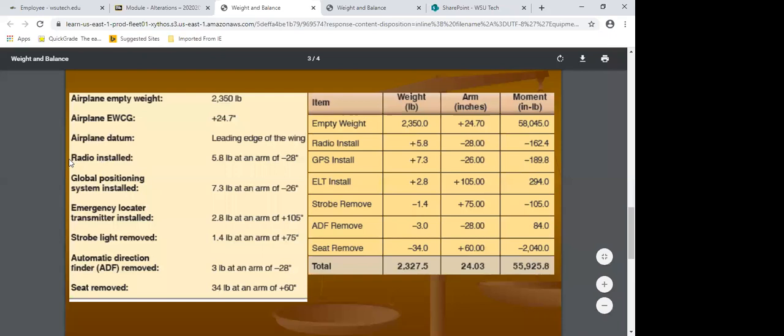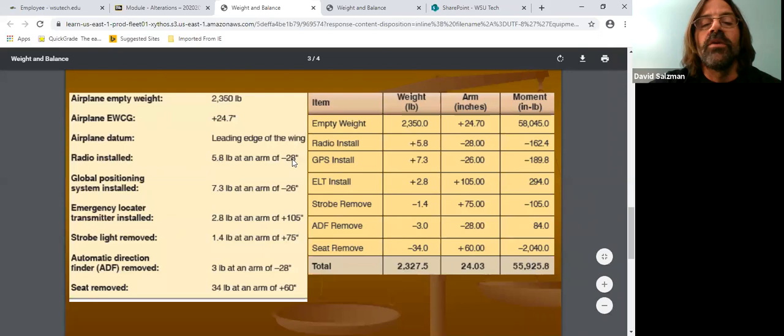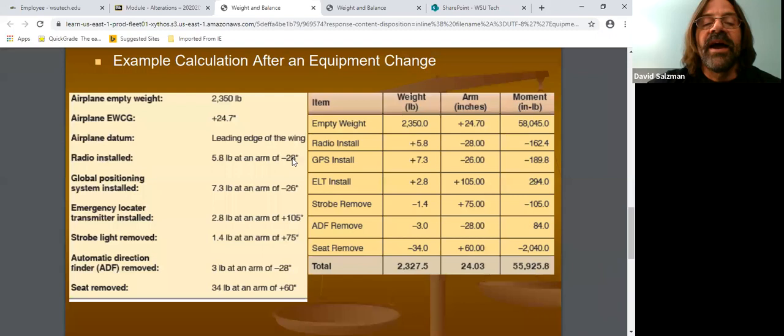Got it. All right. So then the next thing is they got, oh, I installed the radio. So the radio is 5.8 pounds, and it's located at a negative 28 inches. So that would be actually in front of the datum since it's the negative number. So since I'm installing it, it is a positive 5.8 pounds. And then the arm is a negative 28. Multiply these across, and that will give me my moment.